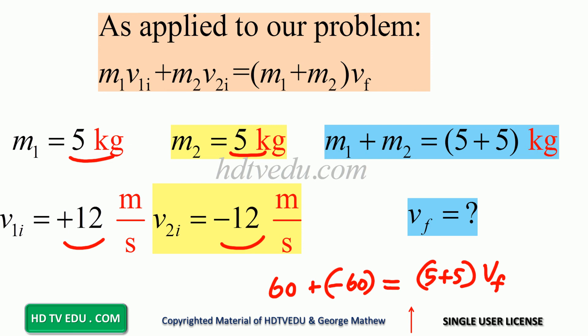So what happens? 60 minus 60 is 0. And 0 divided by anything is 0.